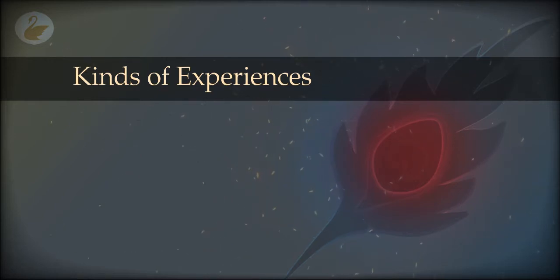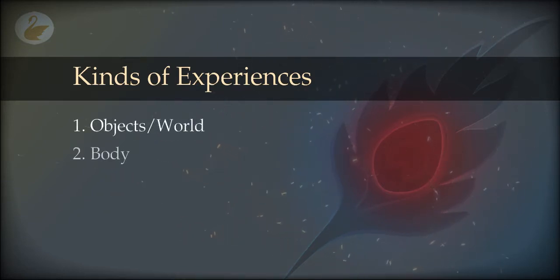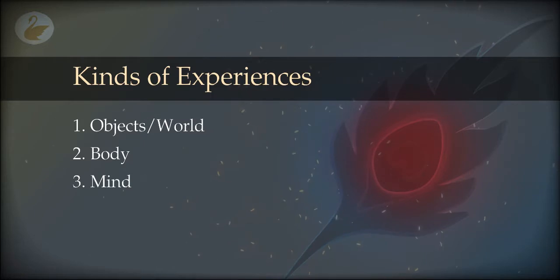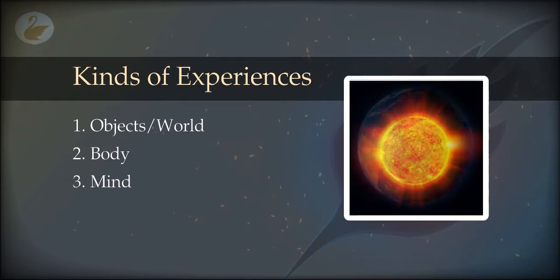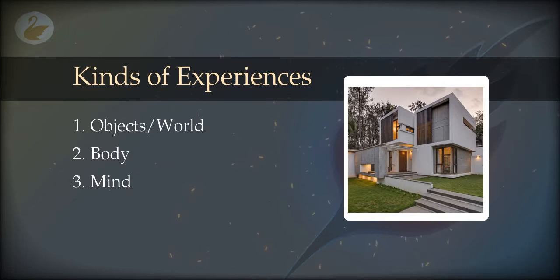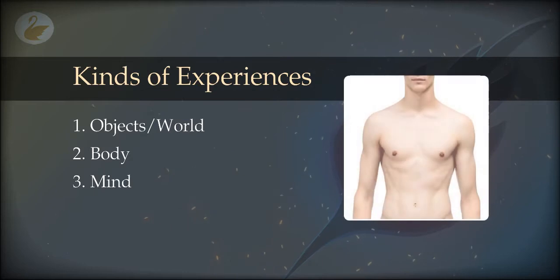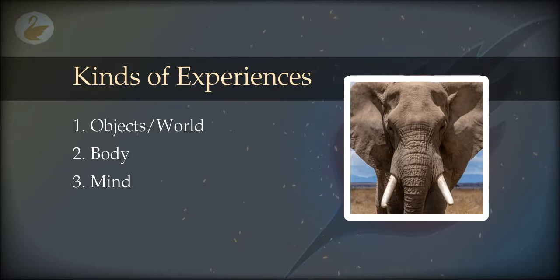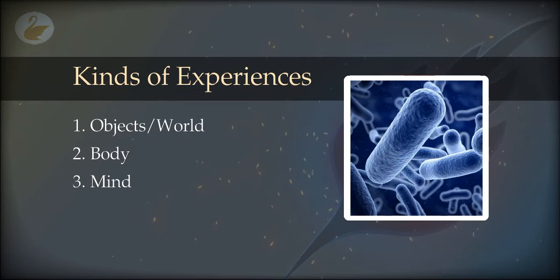Broadly, you can categorize experiences into three categories or three kinds. The first is objects, the second is body, and the third is mind. The objects are that which constitute a collection called the world. World is a collection of objects of innumerable kinds — from big stars and planets to tiny grains of sand, there is an infinite variety. The second is body, and there are many kinds of bodies, right from the human body to even more complex bodies, right down to the insects, bacteria, and viruses.